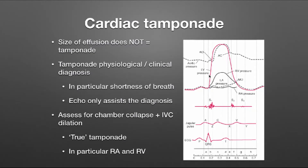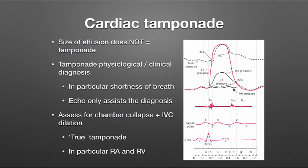Looking at the pressure curves for both the left and right ventricles — it's when chamber pressure is at its lowest that pericardial pressure, once it exceeds a certain level, will cause the chamber to collapse. The right ventricle pressure is at its lowest during diastole, so we see right ventricle free wall collapse particularly in late diastole. For the right atrium, pressure is lowest towards end systole or early diastole, so right atrial free wall collapse typically occurs in late systole or early diastole. Assessing these findings, along with IVC size, helps support a physiological or clinical diagnosis of tamponade.